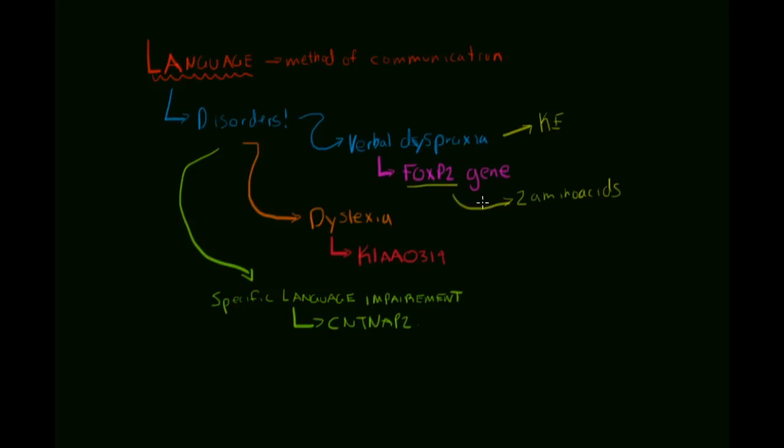So, other types of disorders would be something like specific language impairment. About 7% of 6-year-olds in the United States have a specific language impairment. So, it's just anything that causes them to not be able to comprehend or produce language at the rate or level that most of their peers are able to do. And this usually continues throughout adulthood as well. There's two genes that are associated with it. The KIA0319 and the CNTNAP2.